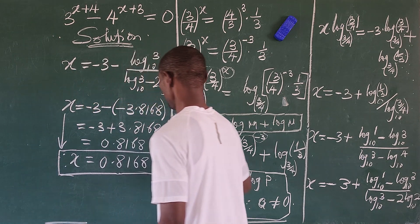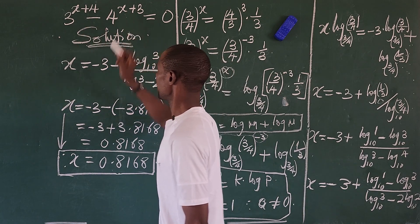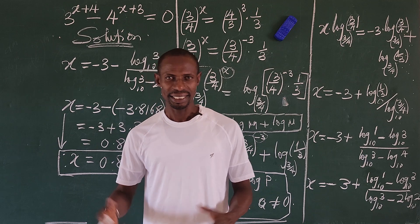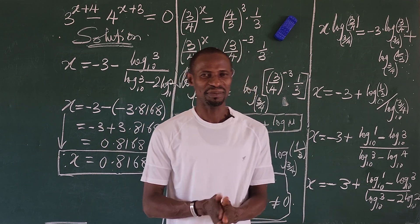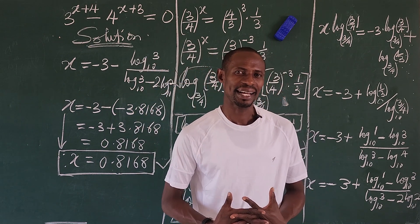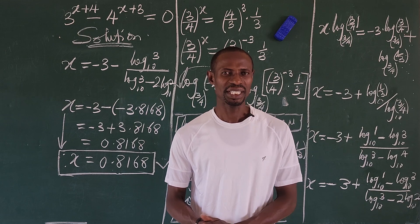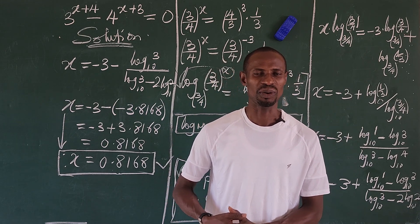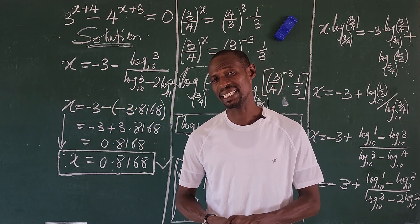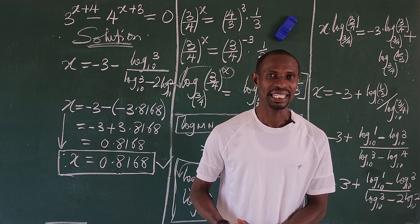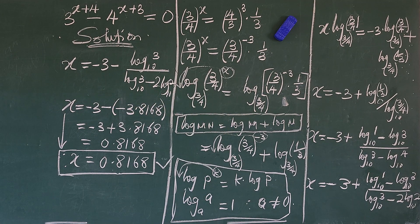So x approximately equals 0.8168 is the value that satisfies the original equation. You can substitute this value back into the equation and verify it gives 0 — I did it and the answer gave 0. This brings us to the end of this math class. If there is any error in the process, drop it in the comment section. Remember, this is Online Math TV and we love you. Keep watching and keep winning.